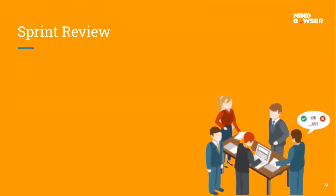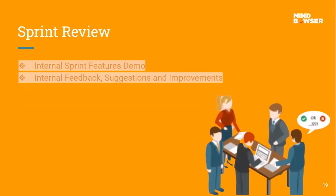After the sprint is done, we go to the sprint review section. We do an internal sprint feature demo whenever the team feels the sprint is complete. Then we do an internal demo and discuss, collecting all the feedback from team members — what suggestions they have, what improvements they think of. We note it down and put it in the backlog.